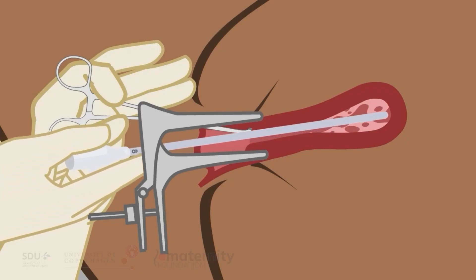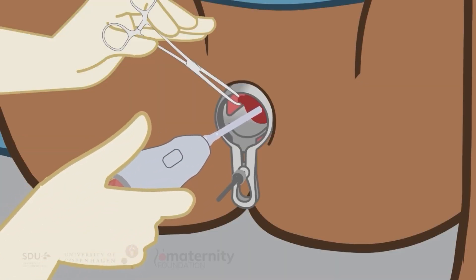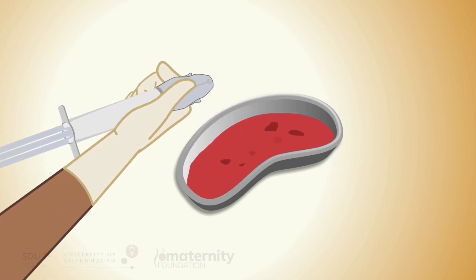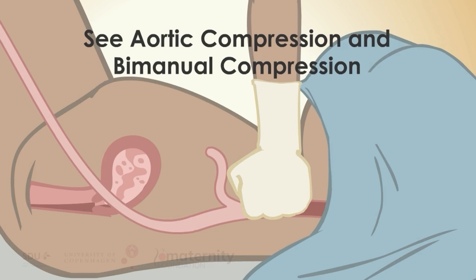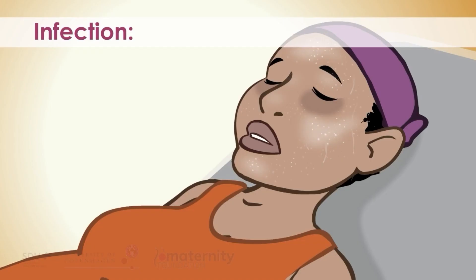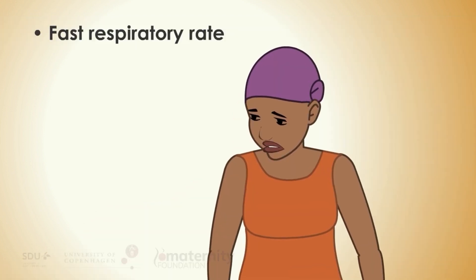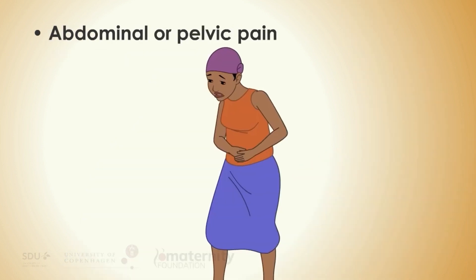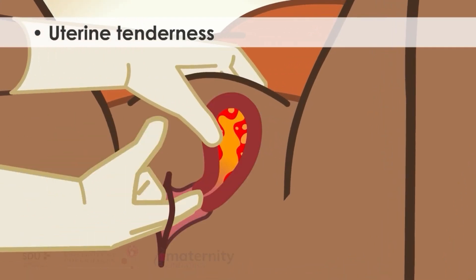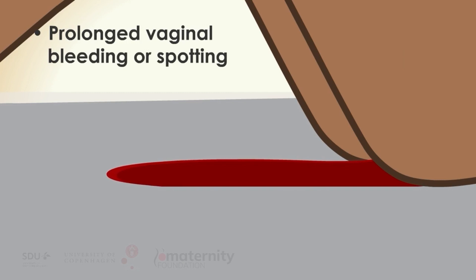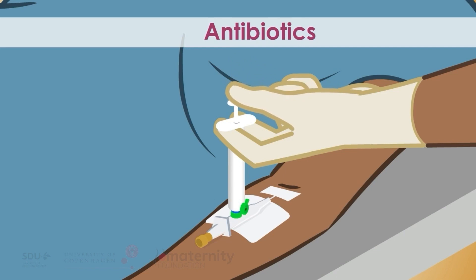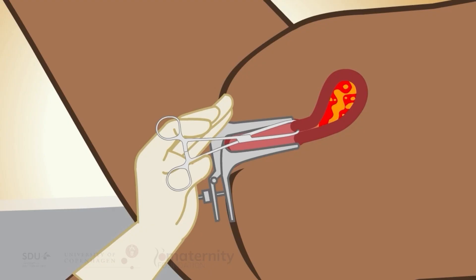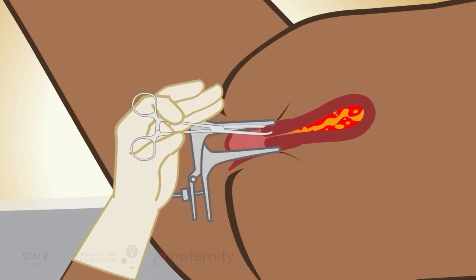Appropriate treatment for hemorrhage depends on its cause and severity. Perform acute MVA to remove products of conception and reduce bleeding, and combine with manual compression maneuvers in severe cases — see aortic compression and bimanual compression subchapters in the PPH module. Common signs and symptoms of infection include fast respiratory rate, fever or chills, foul-smelling vaginal or cervical discharge, abdominal or pelvic pain, uterine tenderness, and prolonged vaginal bleeding or spotting. Women with infection must be assessed thoroughly with vital signs, treated with antibiotics, and may require hospitalization. Infection can in some cases cause severe infection with multi-organ failure called sepsis — a life-threatening condition.